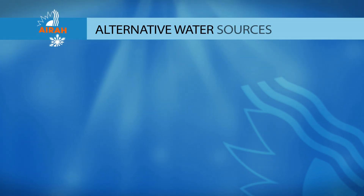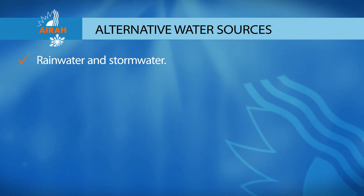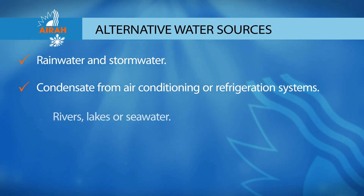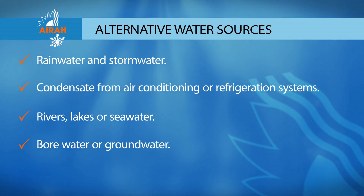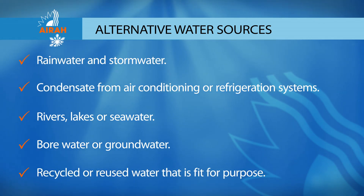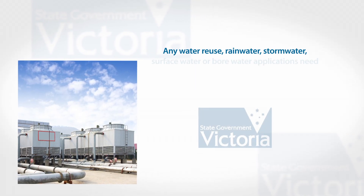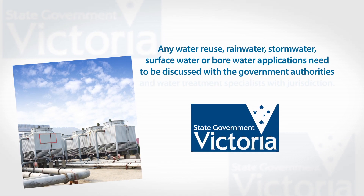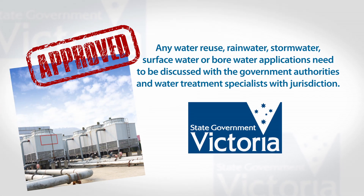Alternative water sources may also be able to be used as make-up water, including rainwater and stormwater, condensate from air conditioning or refrigeration systems, rivers, lakes or seawater, bore water or groundwater, and recycled or reused water that is fit for purpose. Any water reuse, rainwater, stormwater, surface water or bore water applications need to be discussed with the government authorities and water treatment specialists with jurisdiction, so that the appropriate licences, approvals, and technical advice are obtained.